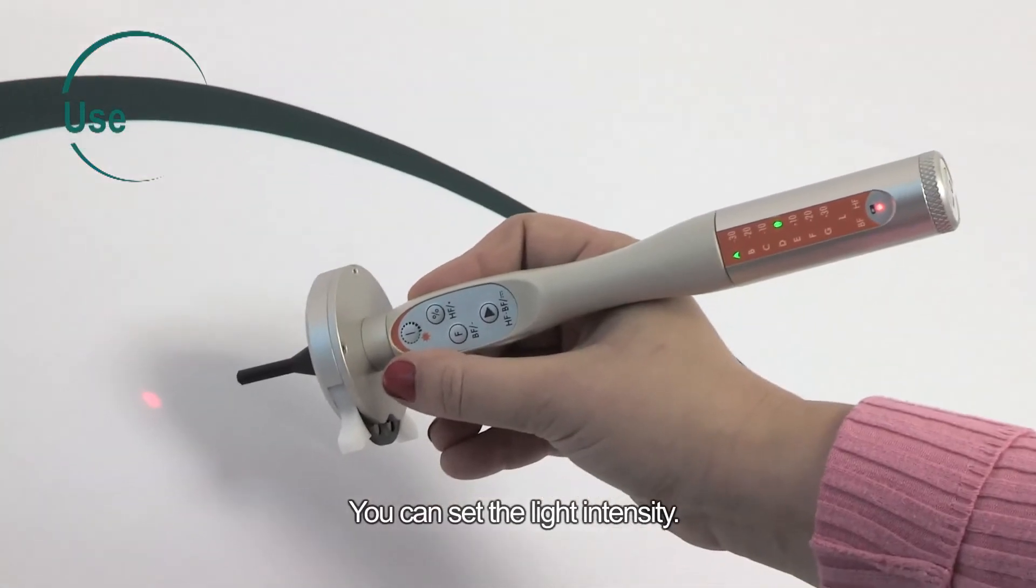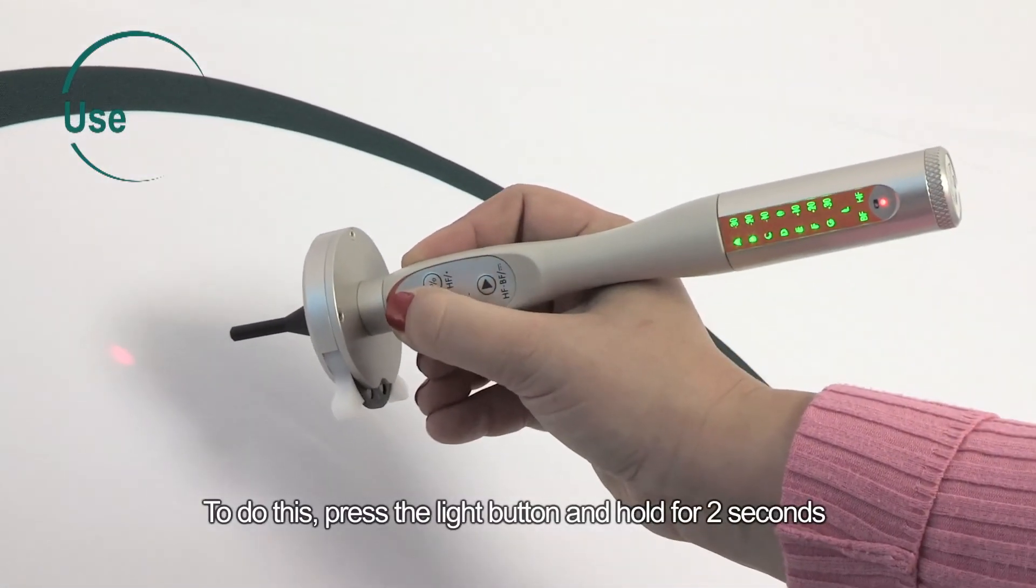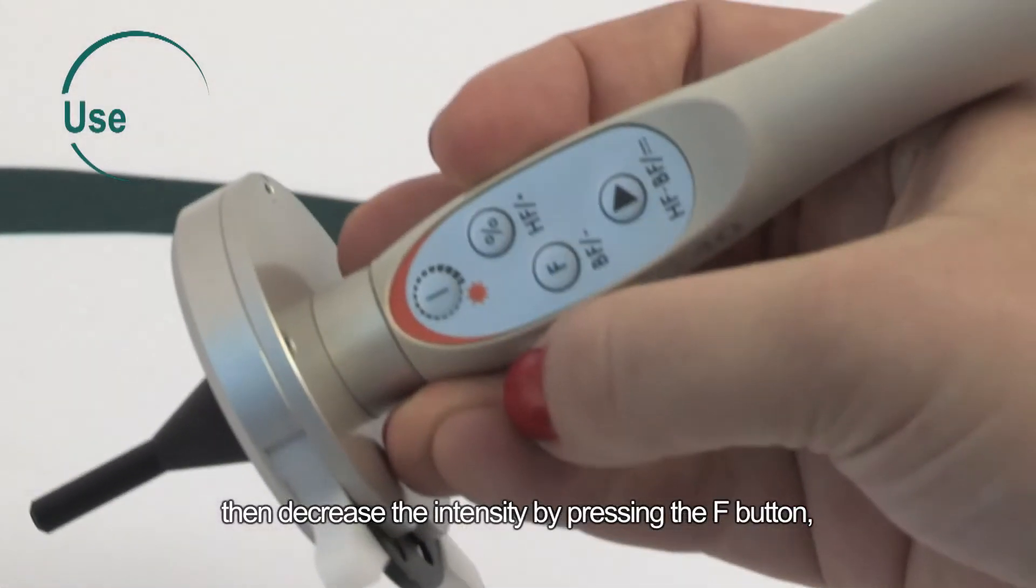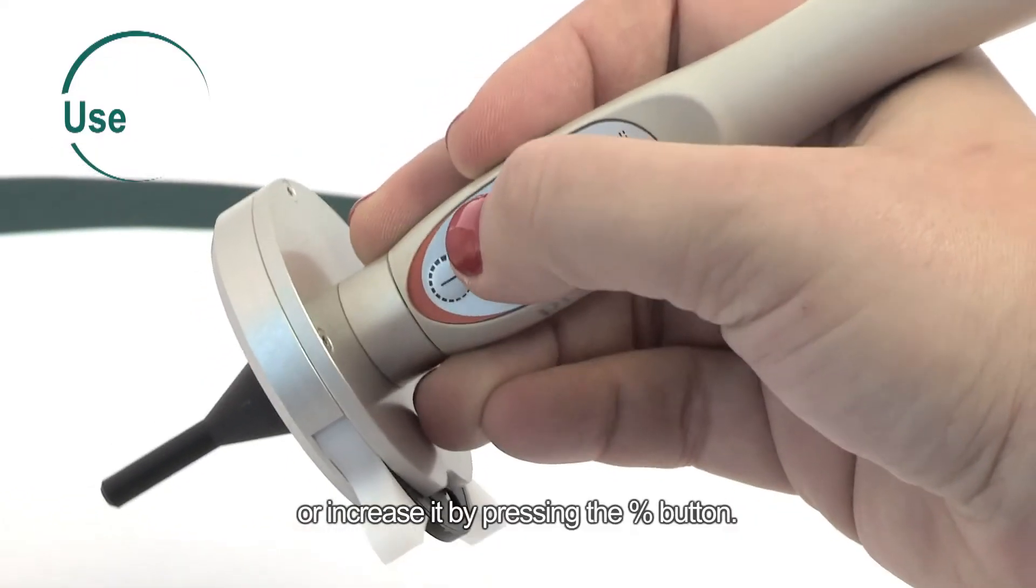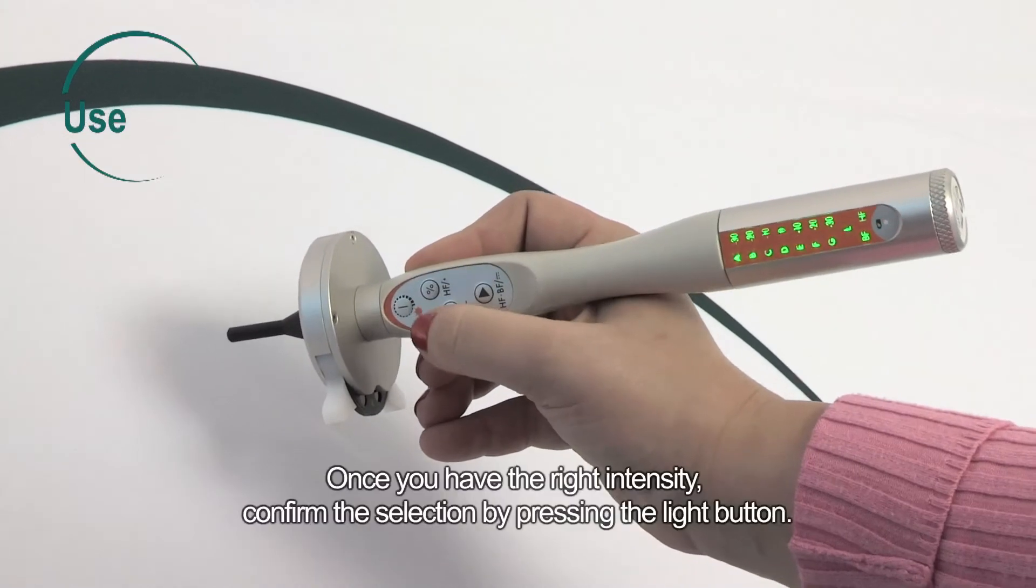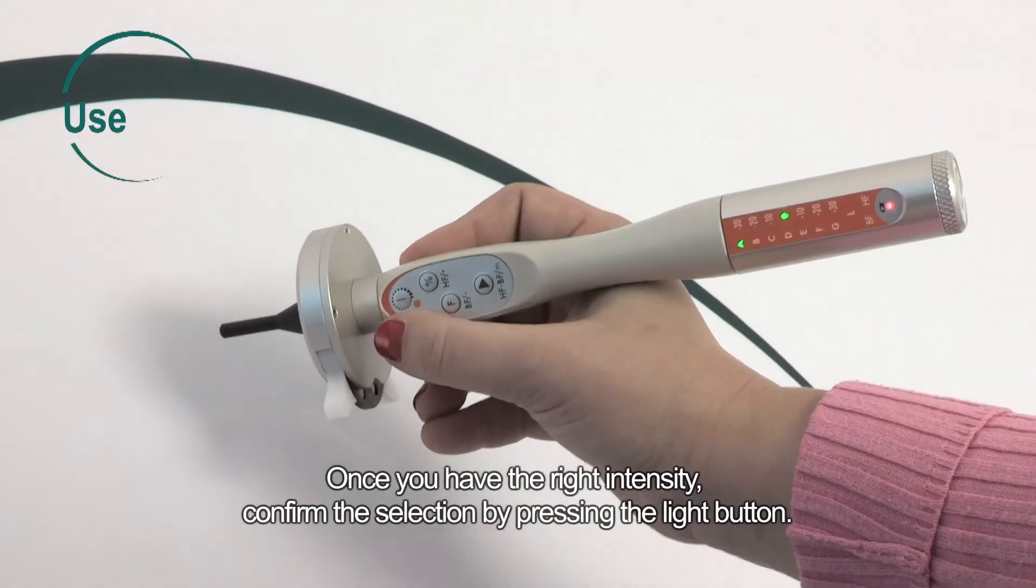You can set the light intensity. To do this, press the light button and hold for two seconds, then decrease the intensity by pressing the F button or increase it by pressing the percent button. Once you have the right intensity, confirm the selection by pressing the light button.